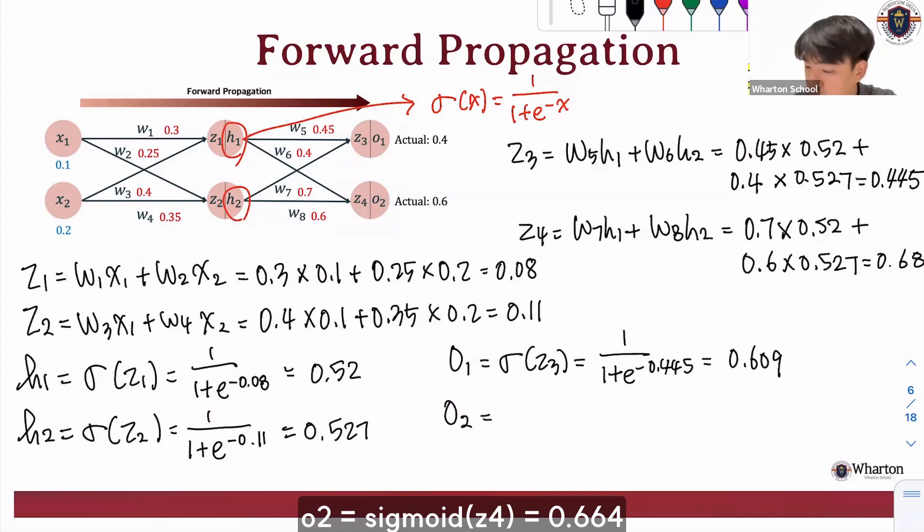And for o2, sigmoid of z4 equals 1 over 1 plus e to the 0.68, which gives us 0.664.